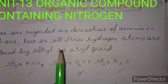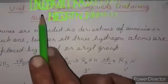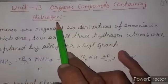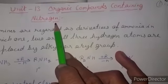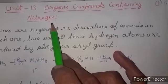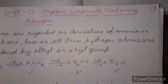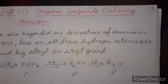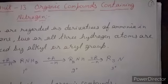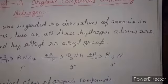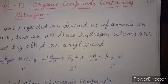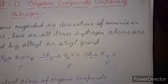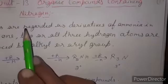Good morning students. Today we are going to start Unit 13: Organic Compounds Containing Nitrogen. In this unit we will discuss amino groups and cyano compounds. Nitrogen is an important constituent of many organic compounds. There are primary amines, secondary amines, tertiary amines, cyanides, isocyanides, nitro compounds, nitrites, diazo, and diazonium salts. First we will discuss amines.